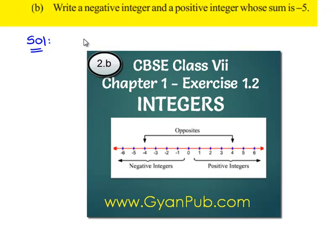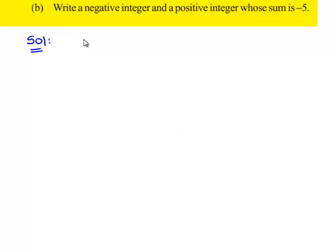Let us see the second bit of the second problem. Given, write a negative integer and a positive integer whose sum is -5.